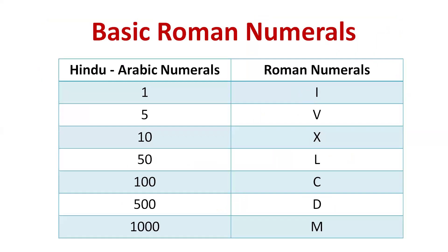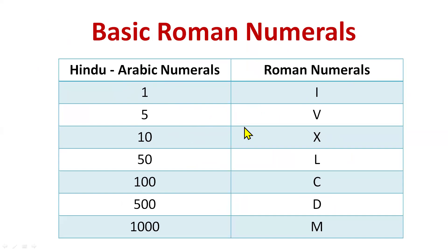Here are some basic Roman numerals. The numbers we normally use are Hindu-Arabic numerals, and the alphabets are the Roman numerals. For 1 we use I, for 5 we use V, for 10 we use X — these three are very easy. Then for 50 we use L, for 100 C, for 500 D, and for 1000 M.